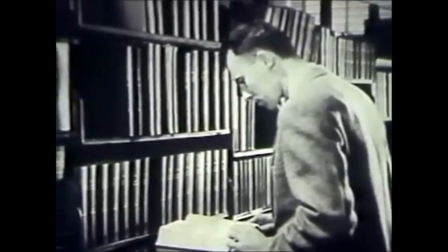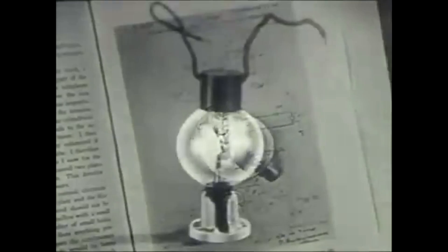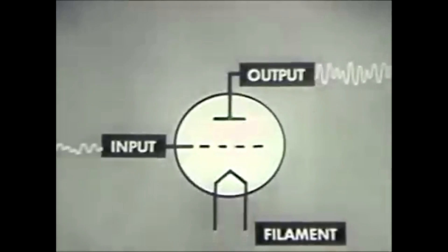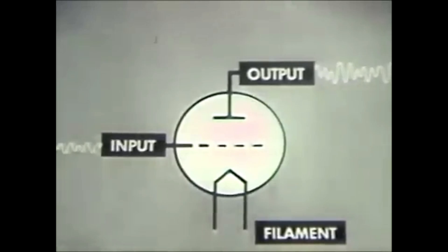The roots of the electronic age reach back into the early years of our century. In 1907, Dr. Lee de Forest discovered that a grid of fine wire placed between a filament and a metal plate in a vacuum tube could control the flow of electrons between the filament and plate, and the tube could be made to amplify as well as detect electrical waves. He called this amplifying tube an audion. Weak signals applied to the input or grid of the audion caused similar and much stronger signals to flow from the plate or output.